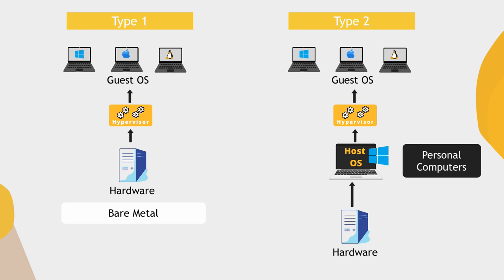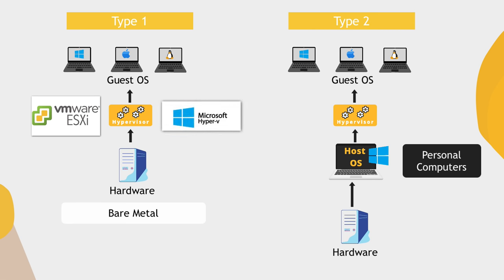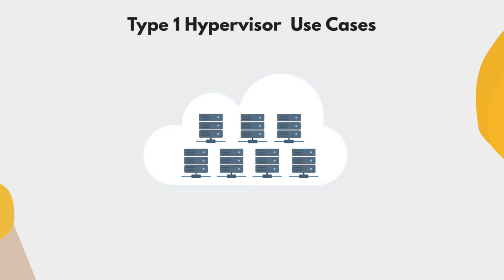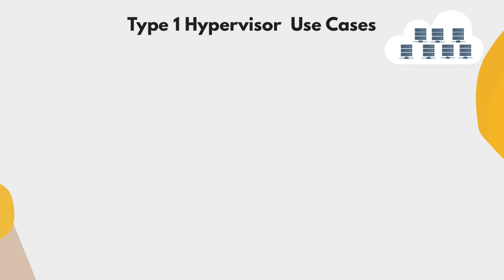Some popular examples of type one hypervisors are VMware ESXi and Microsoft's Hyper-V. Once installed, the concept is the same as with type two hypervisors — you install any operating system on top of it. For big servers, you'll have one physical server with a bare metal hypervisor installed, and then multiple virtual machines running on that hypervisor, all sharing the same hardware resources. Type one hypervisors are mostly what big companies and cloud platforms use to create and run their whole infrastructure.